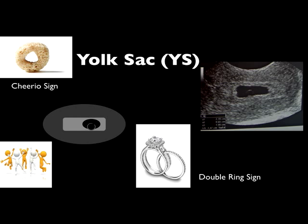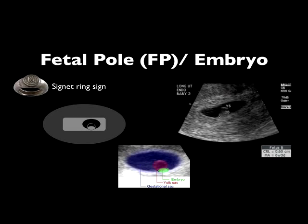The yolk sac has the appearance of an echoic ring-shaped structure, also known as the double ring sign — two rings being the yolk sac and the gestational sac. It's also called the cheerio sign because it appears like a cheerio in the gestational sac. Once we find the yolk sac, our next question is the gestational age and whether we can see evidence of a fetal pole. The fetal pole is the echoic structure right next to the yolk sac, the very beginning of the fetus. It's also called the signet ring sign, and can be used to measure gestational age by measuring the crown-rump length of the fetal pole.